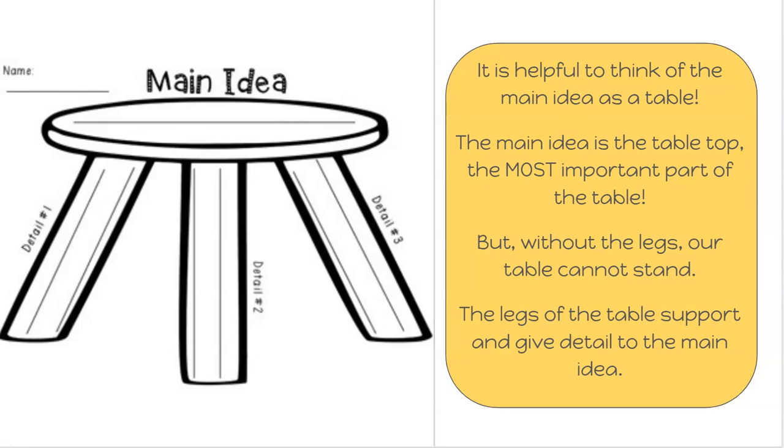Now we can't have that table top without the legs. It wouldn't be able to stand and it would be useless. So when we think about a story and our main idea, we need to have the details to support our main idea that holds it up and really gives us an understanding about why this certain area is the main idea.